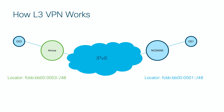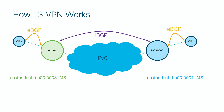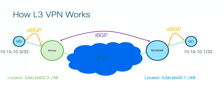We also know that there must be some PE-CE routing protocol. The most common is BGP, using IPv4 unicast address family. For VPN we also need an iBGP session over the core — specifically VPNv4 unicast address family — typically through a route reflector. CE1 will advertise, for example, 10.10.10.1, and CE3 will advertise 10.10.10.3.